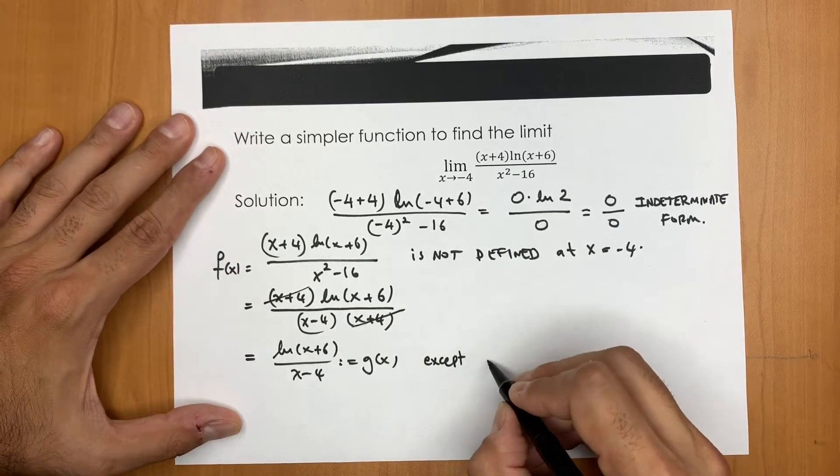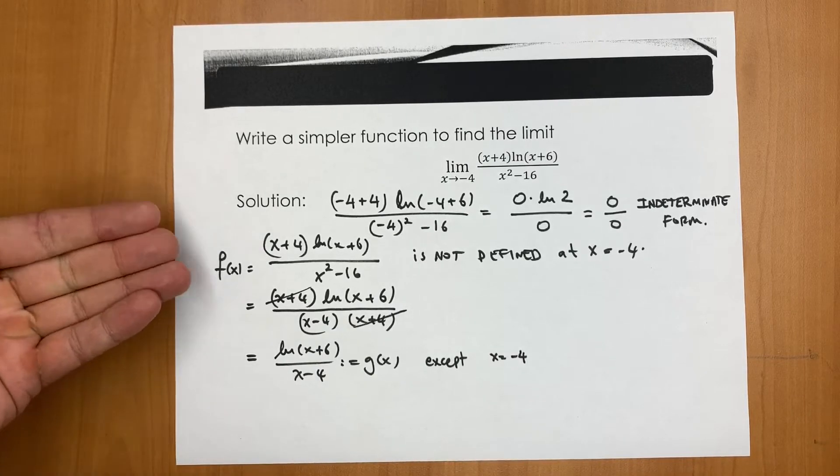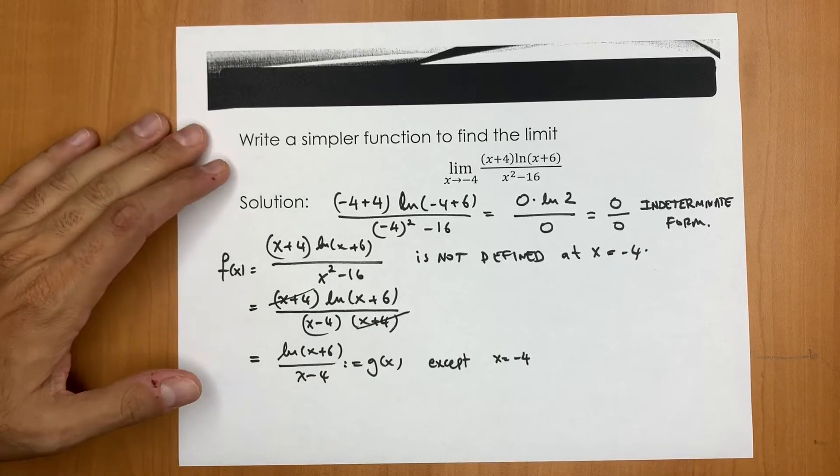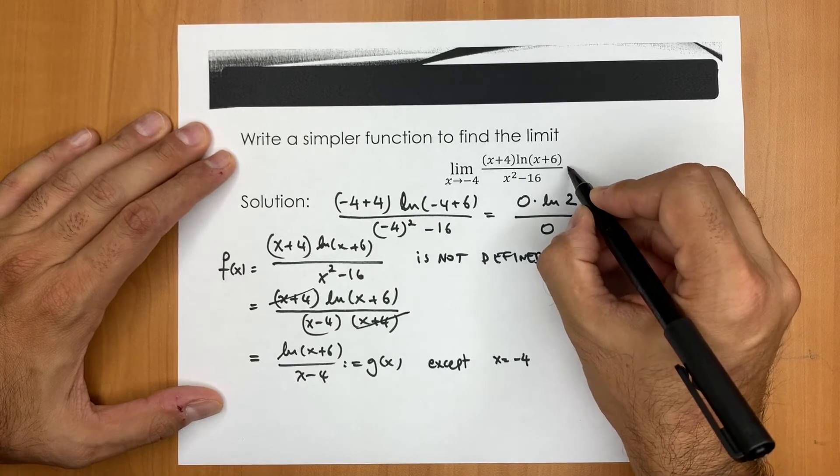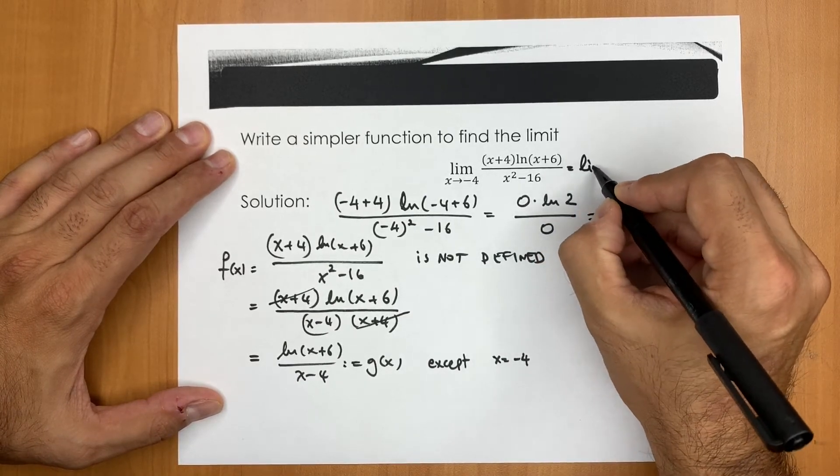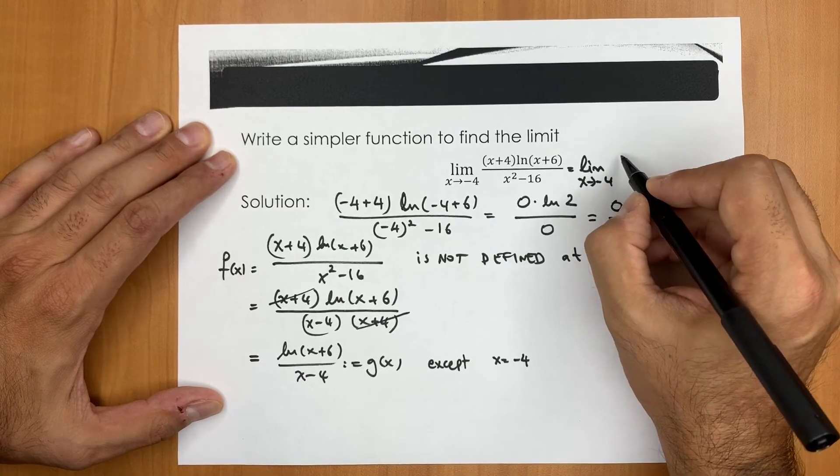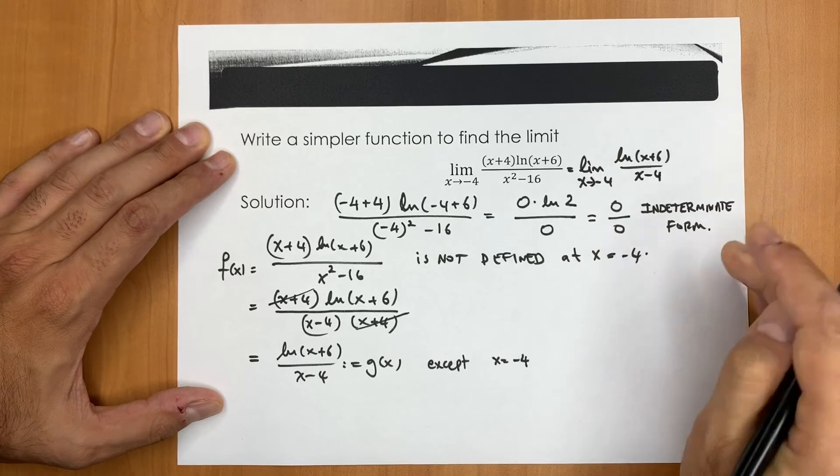everywhere except x equals -4. Why are f and g not equal at x equals negative 4? Because I know that f is not defined at negative 4, however g is defined. In fact, this limit now turns out to be the limit of the g function which is ln(x+6) divided by (x-4).